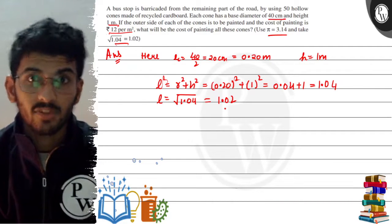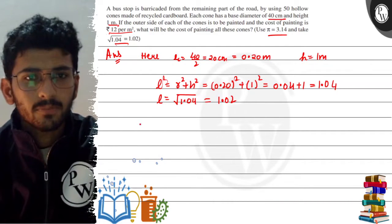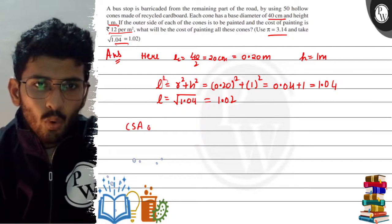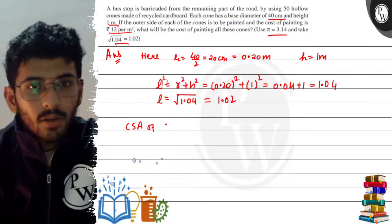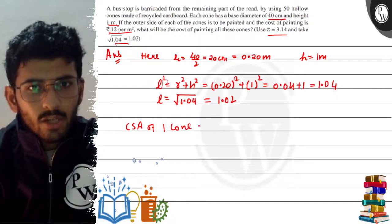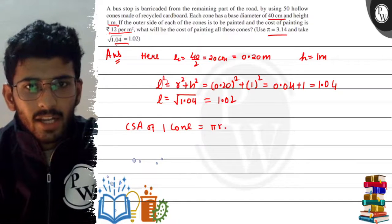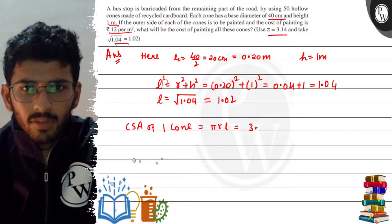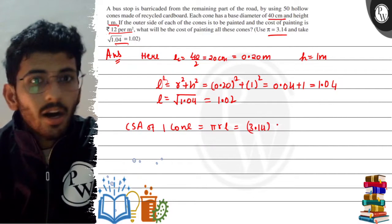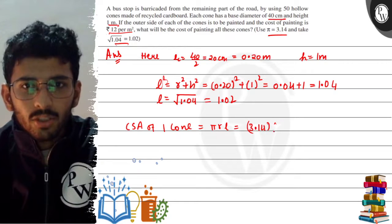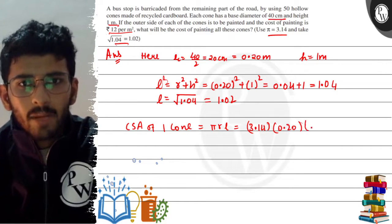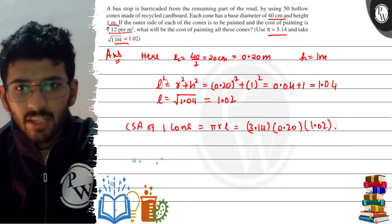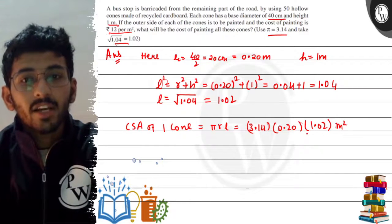Now that we have l, we can calculate the curved surface area. The curved surface area of one cone is πrl, where the value of pi is 3.14, r is 0.20 m, and l is 1.02 m, which we just calculated. This gives us the curved surface area of one cone in meter square.